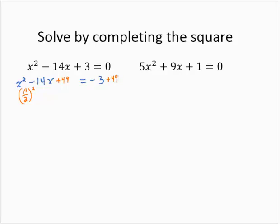Now that completes the square. We write the factored form of the trinomial. So x squared minus 14x plus 49 is x minus 7 squared. And on the right hand side we have negative 3 plus 49, that's 46.